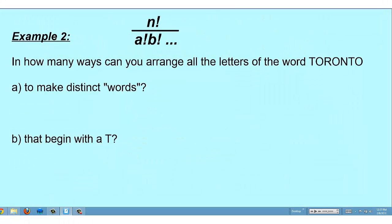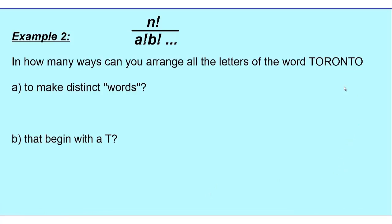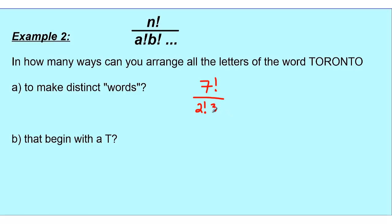Example two: in how many ways can you arrange all the letters in the word Toronto to make distinct words? Counting the letters — there are seven. Seven things can be arranged in 7 factorial ways. But Toronto has repetitions: T appears twice and O appears three times. So we divide out those repetitions: the two T's give 2 factorial and the three O's give 3 factorial. The total number of distinct words is 7 factorial over 2 factorial times 3 factorial, which equals 420.